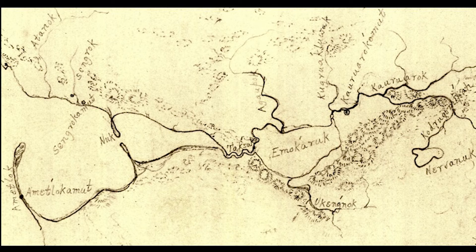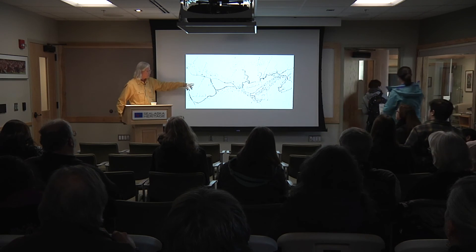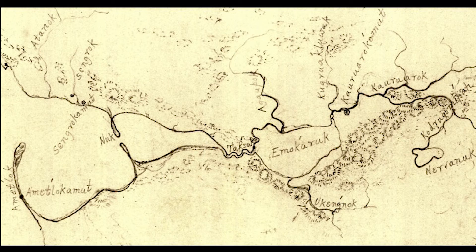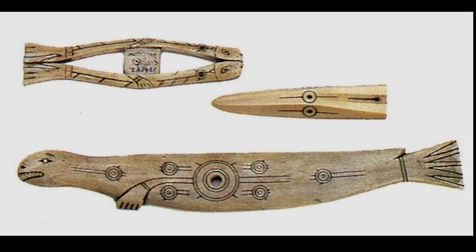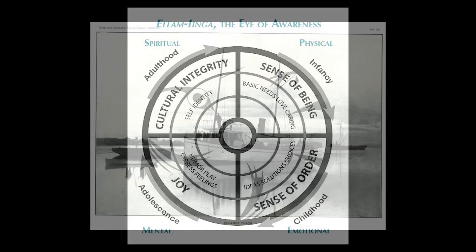It turns out that circle-and-dot is a way to mark places that has a lot of salience along the shores of the Bering Sea for a very long time, and still does. There are many names for it in Yupik and Yupiat. One way to translate it is 'the Eye of Awareness.' This is part of a wellness project for an Indian Health project out of Bethel.